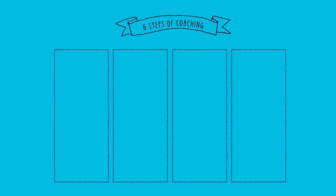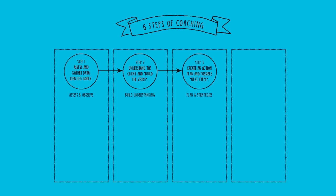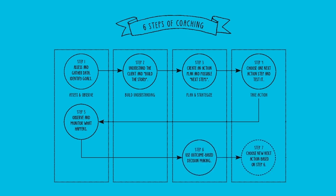Now that you know your tasks, let's look at the six steps of coaching. Step 1: Assessing, gathering data, and identifying client goals. Step 2: Understanding the client and building the story. Step 3: Creating an action plan and possible next steps. Step 4: Choosing one next action step and testing it. Step 5: Observing and monitoring what happens. Step 6: Using outcome-based decision making. This is a cyclical process — step 1 will occur the first day you meet with a client, but you may also want to do this periodically as they evolve. Step 5 also looks a lot like step 1, and as you gather more data, you'll be revisiting step 2. Based on what happens in steps 5 and 6, you may need to revisit step 3 to develop a new action plan if it didn't end up being helpful or useful.